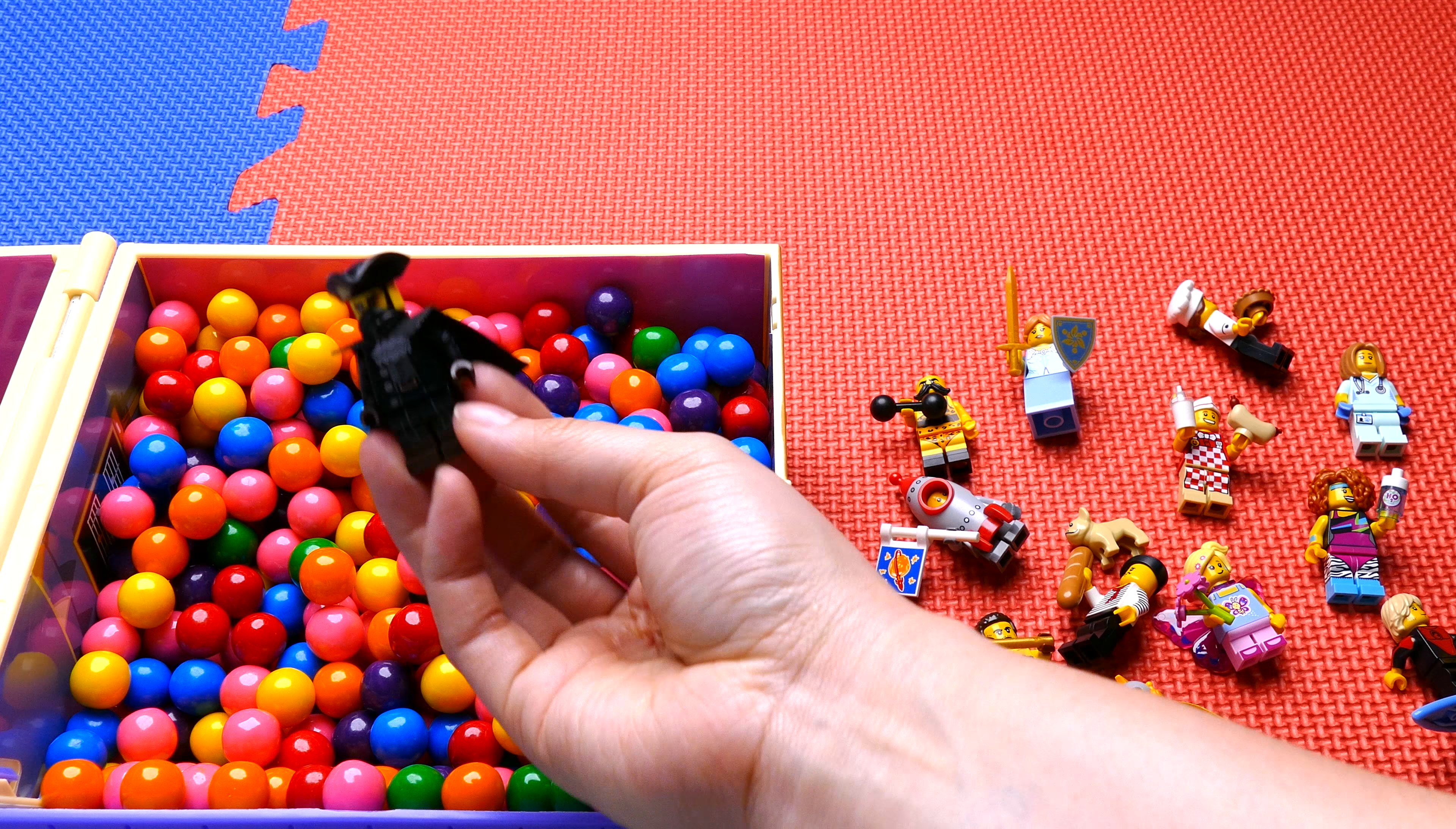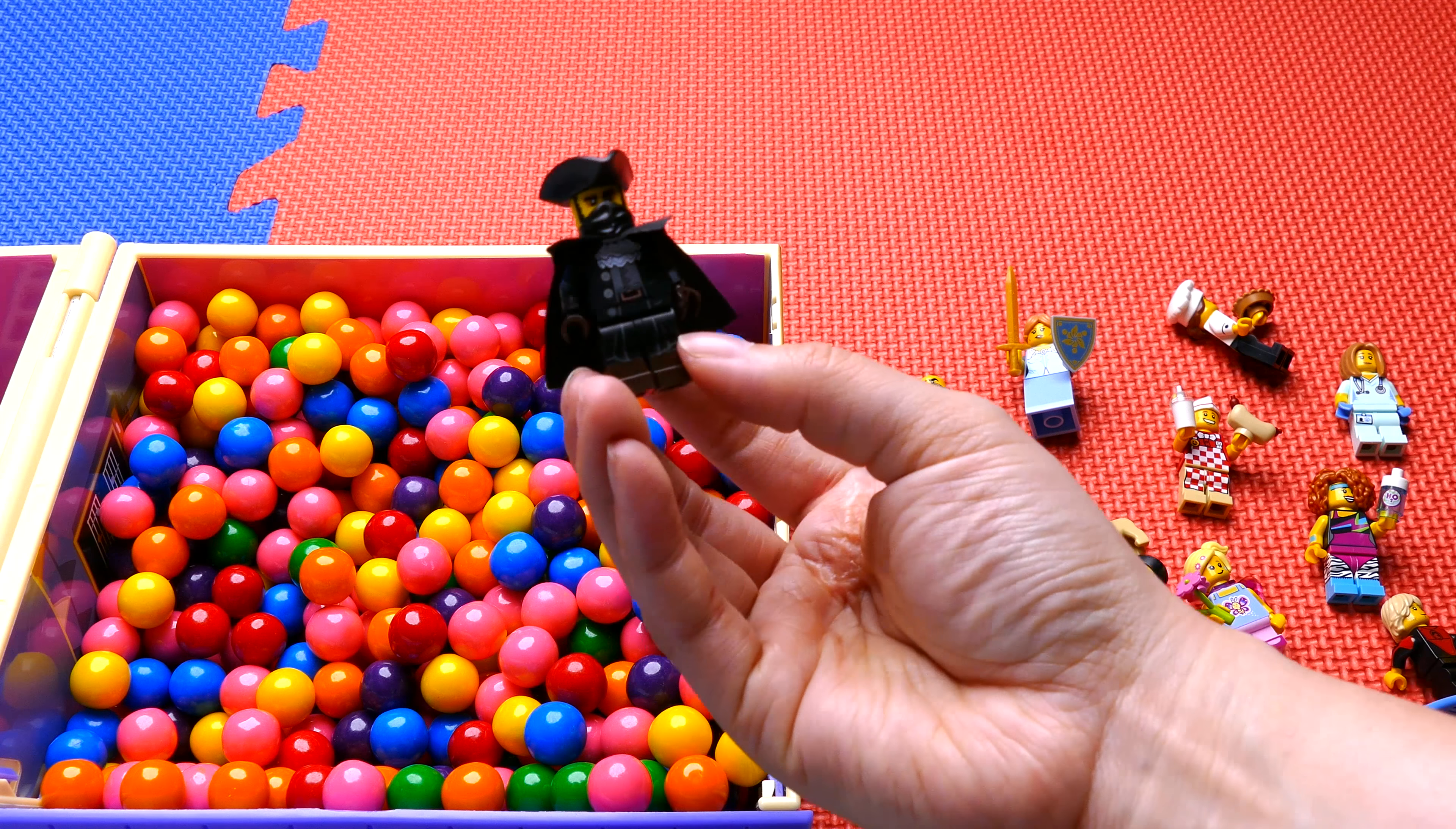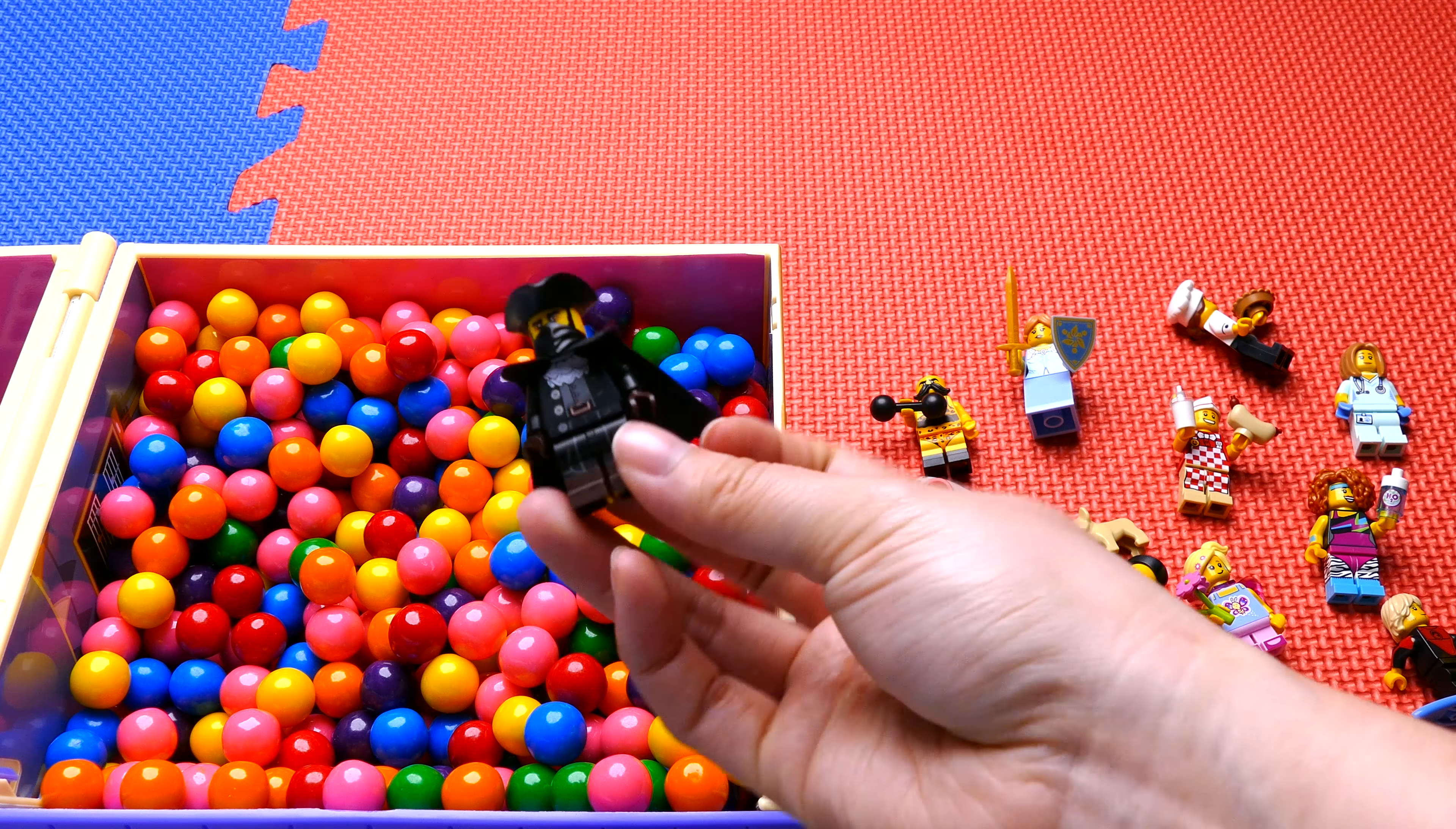This is our mystery minifigure Highwayman. He's mysterious. He robs people on the highway, so be careful if you see him. He has a black cape, a black hat, and a bandana that he wears. Beware.